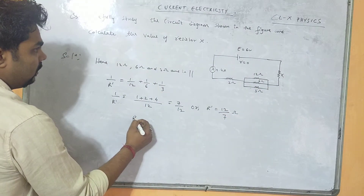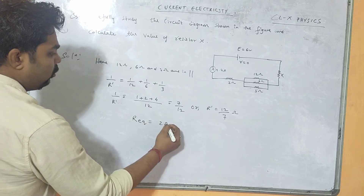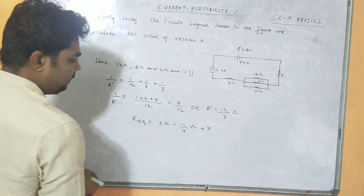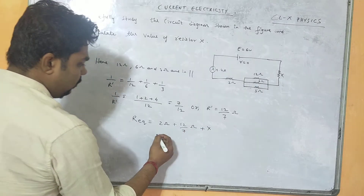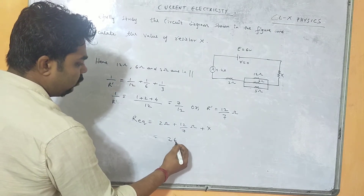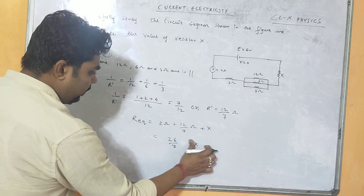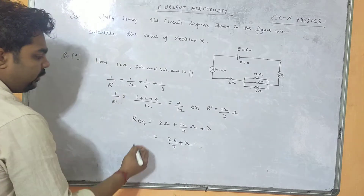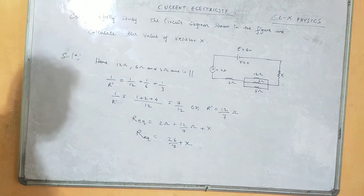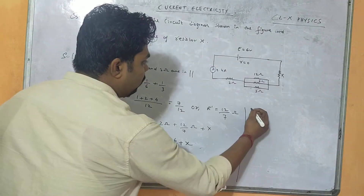This 12/7 is in series with 2 ohm and X. So total R_equivalent = 2 + 12/7 + X. Taking LCM, that gives us 14/7 + 12/7 = 26/7 ohm plus X.